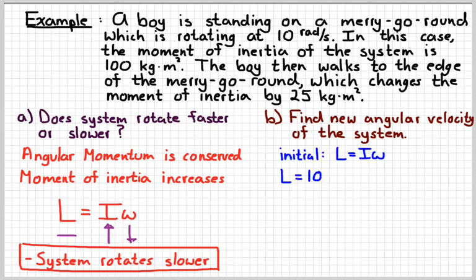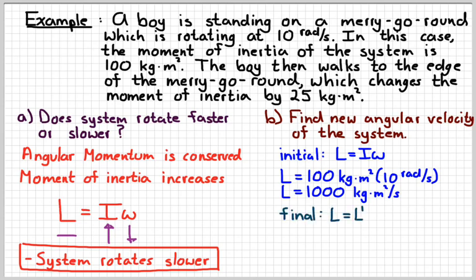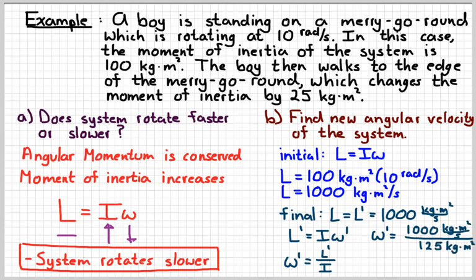Finding the new angular velocity, we will first figure out how much momentum the system has. Substituting in numbers into L equals I omega, 100 times 10, that tells me the system has 1,000 kilogram meter squared per second angular momentum. That's going to be conserved, and so we're going to keep L the same. Solving for omega would give me L over I, so my new omega would be 1,000 over the new I, the new moment of inertia, which would be 125. Just add the 25 to the 100, which means this merry-go-round and boy are now rotating at 8 radians per second. Which should make sense, because we predicted earlier that the system would slow down, because the moment of inertia got bigger.